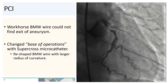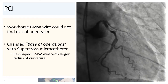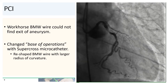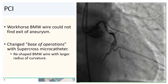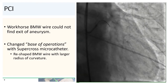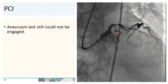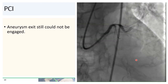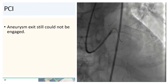In our case, our workhorse BMW wire could not find the exit of the aneurysm, so we advanced a Supercross microcatheter into the body of the aneurysm and reshaped our wire with a larger radius of curvature in the hopes of engaging the mouth of the aneurysm. Nevertheless, with the Supercross microcatheter in the body of the aneurysm and a larger curve on our workhorse wire, we were still not able to get the wire to hook into the exit of the aneurysm.